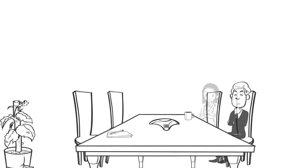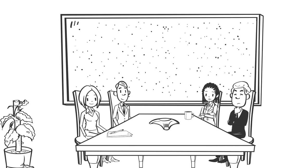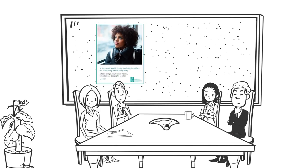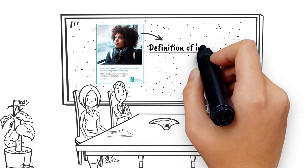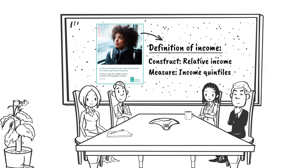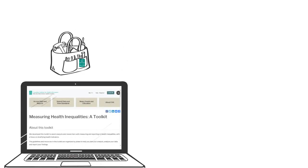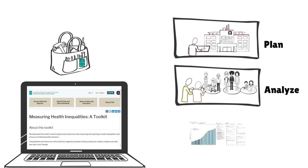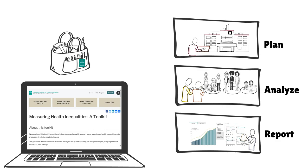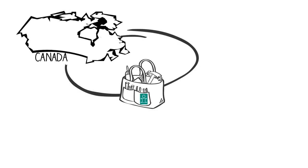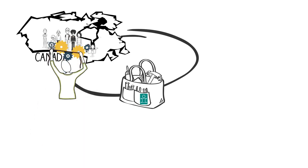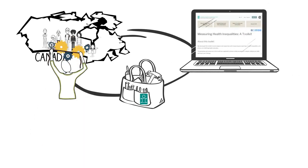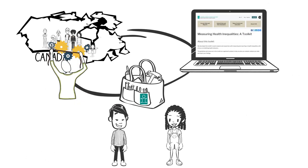In collaboration with experts across the country, CIHI has developed standard definitions for equity stratifiers to support analysts with measuring health inequalities. These definitions are featured in a toolkit, which is designed to help you plan your analysis, analyze your data, and report your findings. Using this CIHI toolkit, you can identify health differences and monitor progress towards closing the gap between subpopulations.